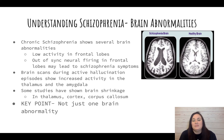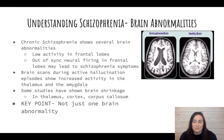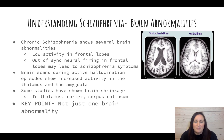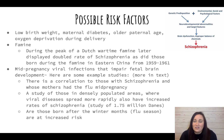Some studies have shown brain shrinkage in the thalamus, the cortex, and the corpus callosum. An image comparing a healthy brain to one with schizophrenia shows more open, fluid-filled space due to this shrinkage. The key point is that it's not just one part of the brain that is different — there are several factors, and they can look different in different people.